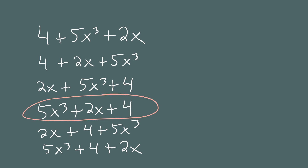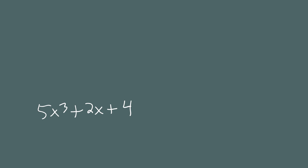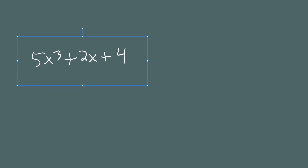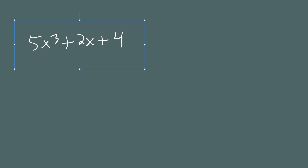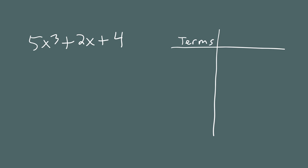I've now hidden the non-standard ways of writing this polynomial. Let me move the correct answer up to the top and explain the rules. Looking at this polynomial, there are three terms. I want to talk about the degree of each term, so let me make a table with a column for the terms and a column for the degree.